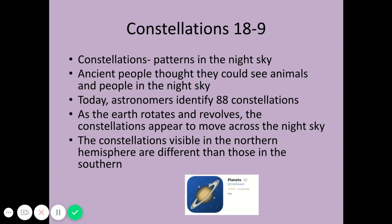As the Earth rotates and revolves, the constellations appear to move. Earth's rotation gives us our day and night cycle, and we notice that some stars rise in the east and set in the west — just like the moon and sun do — because it's really the Earth's rotation causing this apparent movement, not the objects themselves moving.